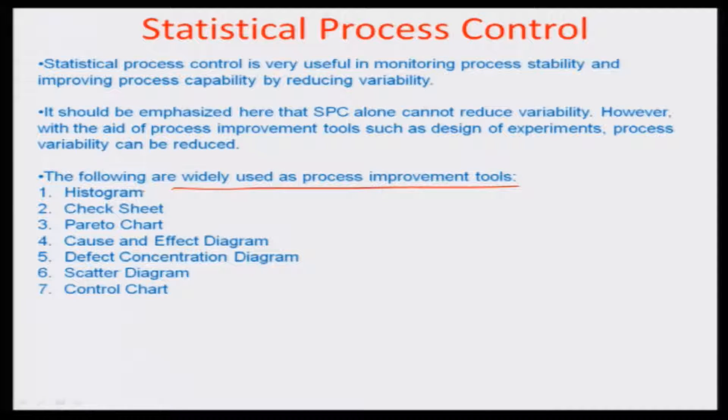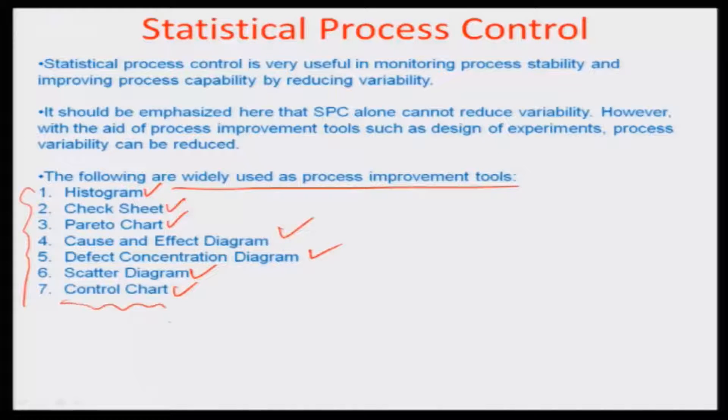There are mainly seven tools of quality control used to statistically represent measured output in a manner that brings issues quickly to the attention of process management. These are widely used as process improvement tools: the histogram, the check sheet, the Pareto chart, the cause and effect diagram, the defect concentration diagram, the scatter diagram, and finally the control chart. Particular emphasis will be placed on control charts as real-time health monitoring of a process.